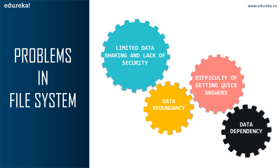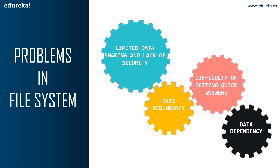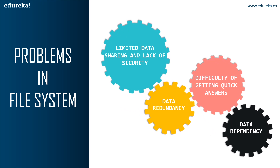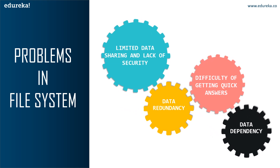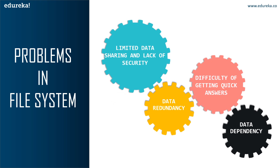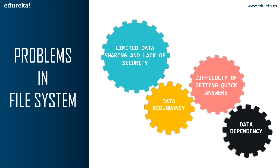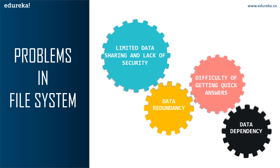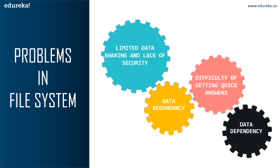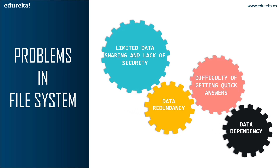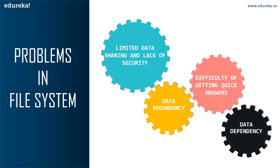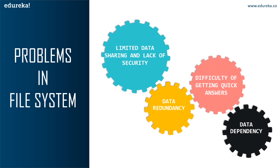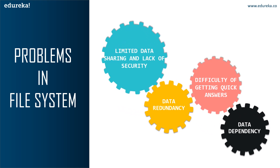The next problem is data dependence. In the file system, files and records are described by a specific physical format that is coded into the application by the programmers. If the format of any one record is changed, then we need to make sure that all the remaining records' format is updated. Any changes in storage structure or access methods could greatly affect the process, and this might result in failure of that particular application.